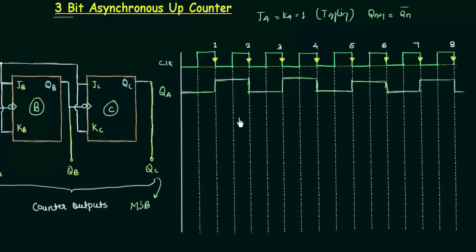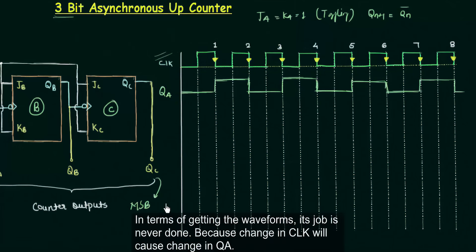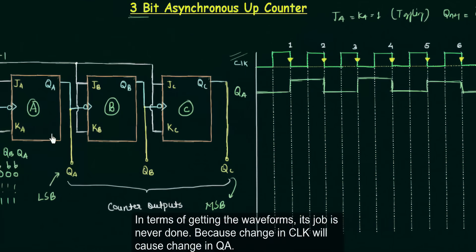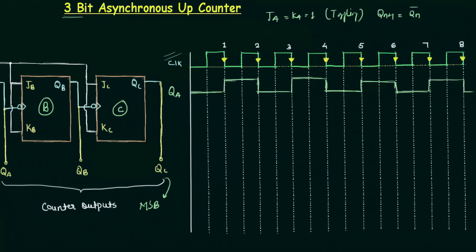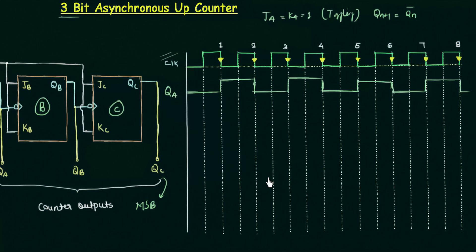Now the important point is that you don't have to look at the original clock again for QB. Since QA goes into the clock input of flip-flop B, QA now acts as the clock for flip-flop B. To plot QB, I consider all the falling edges in QA, and the toggling in flip-flop B occurs depending on those falling edges.